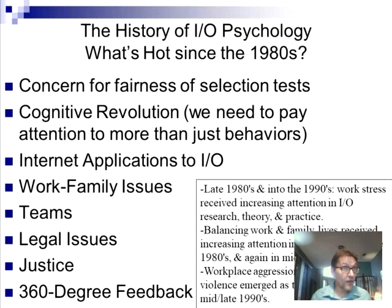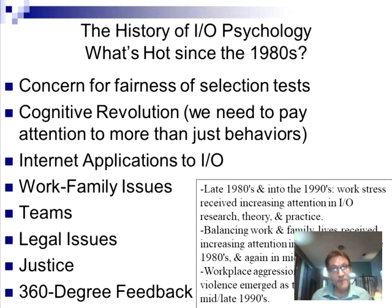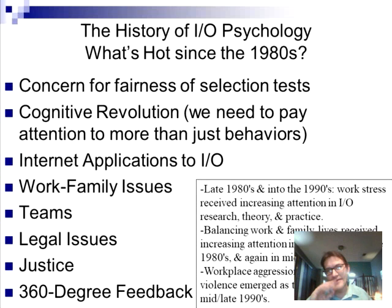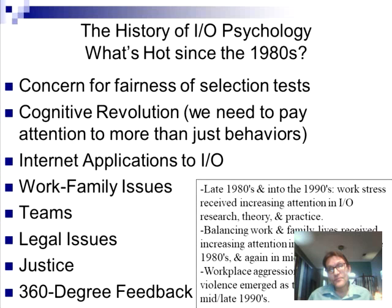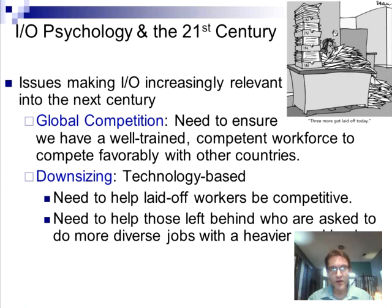The cognitive revolution brought the understanding that a worker on an assembly line is not a machine — they have needs beyond oil and maintenance. You have to consider the individual. There are also many internet applications in IO psychology: for example, what's the most cost-effective way to train employees? Should people come to a central location, should a trainer be sent to the factory, or should instructional videos be created? Work-family issues are also a growing area — workers don't just shut off at night, and addressing family issues can improve performance at work.